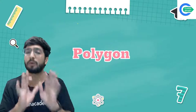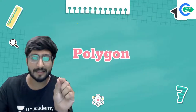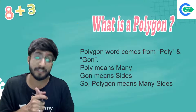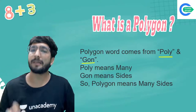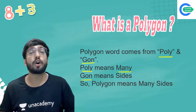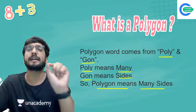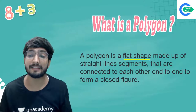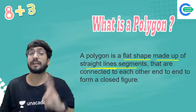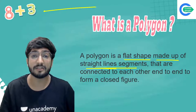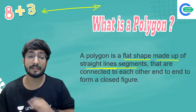Moving to polygons — the word comes from 'poly' meaning many and 'gon' meaning sides, so polygon means many sides. The definition: a polygon is a flat shape made up of straight line segments. Two important things — they must be straight lines, and they must be line segments meaning fixed length. It is a flat shape made of straight line segments.